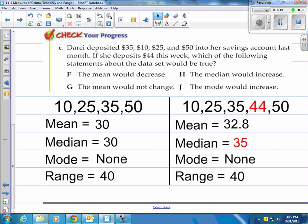It says the mean would decrease. Well, that's not correct. The mean would not change. No, it does change. The median would increase. Well, definitely increased. How about the mode? The mode would increase. No, it stays the same. So the median would increase to 35 is the correct answer, and that's C.